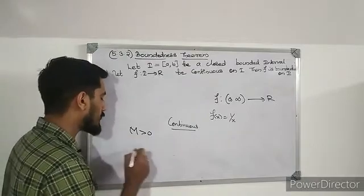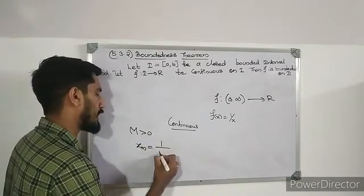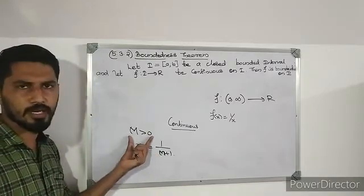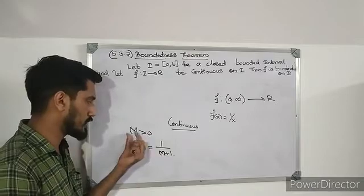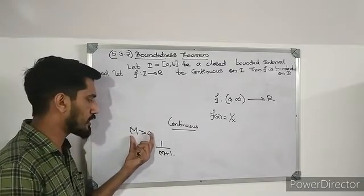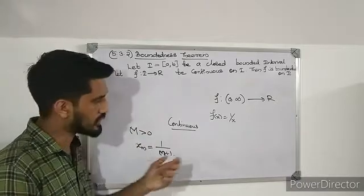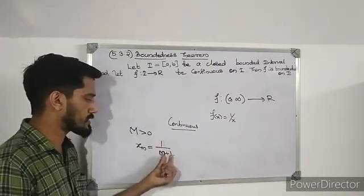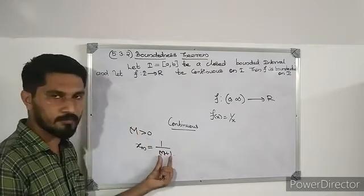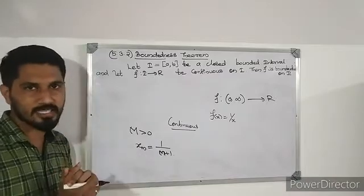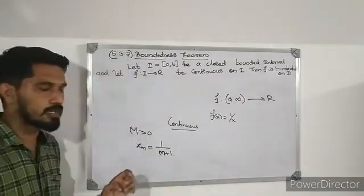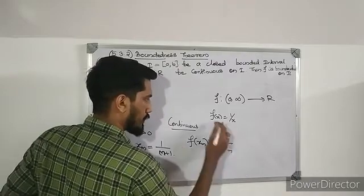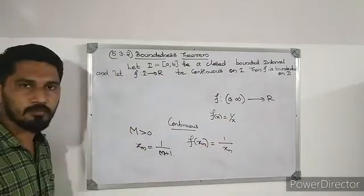Now let's look at this carefully. Let xm = 1/(m+1). Then 1/xm = m+1. So f(xm) = 1/xm = m+1. This sequence xm lies in the interval (0, ∞), and as m increases, f(xm) = m+1 grows without bound. This confirms the function is unbounded on this open interval.